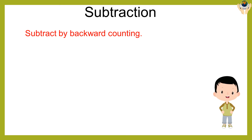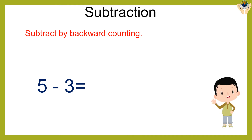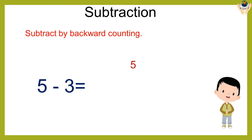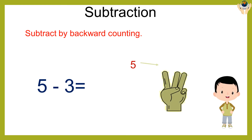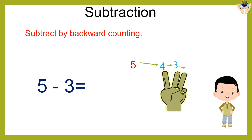Subtract five minus three. Which is the bigger number? Five. Which is the smaller number? Three. So five in your mind and three on your finger. Start backward counting: five, four, three, two. The answer is two.